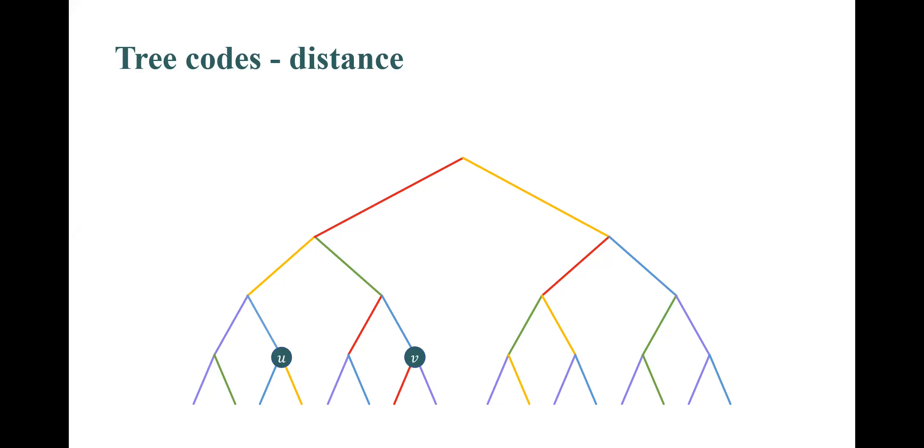For example, if we consider the following vertices u and v, the least common ancestor is w, and their distance is one half, since they have a different coloring for the first edge in the considered path, and the same color for the second.